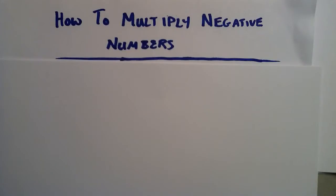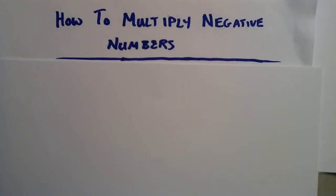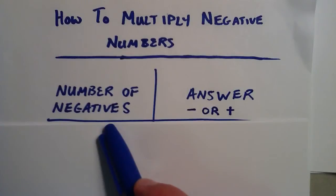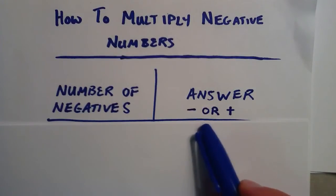Basically, multiplying negative numbers is going to be the same process as multiplying positive numbers, except we have to determine whether our answer is negative or positive. The easiest way to do this is we count the number of negatives that are multiplied in our product, and that will tell us whether our answer is negative or positive.